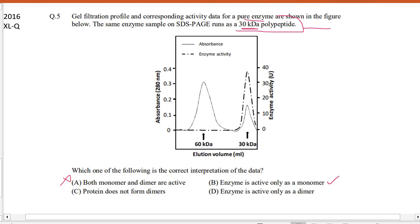Protein does not form dimers is not correct because we can see absorbance here. So even if the protein does not have enzymatic activity, but still we can see that absorbance is there, that is protein is there. So protein does form dimers, so this option is also wrong.